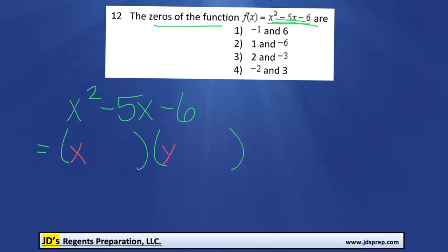And then the numbers we put in the second section, we know that they need to multiply to get us negative 6, and they have to add to get us negative 5.